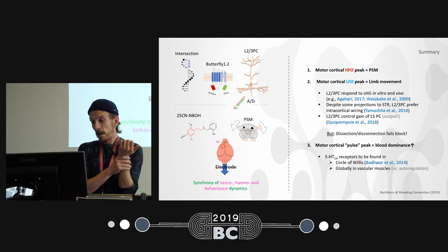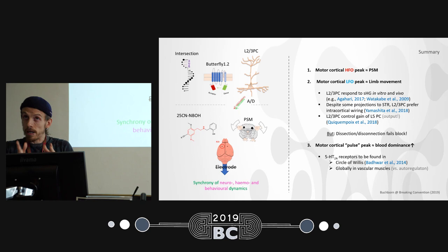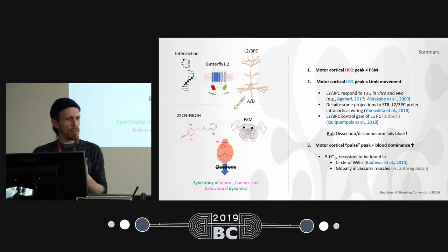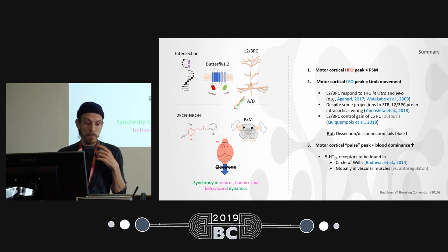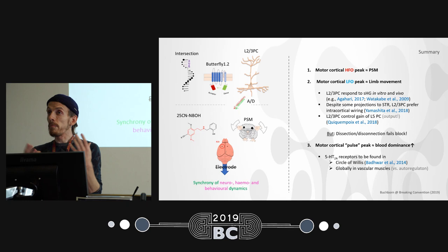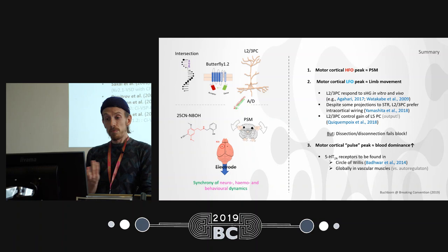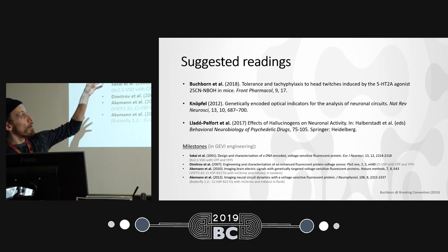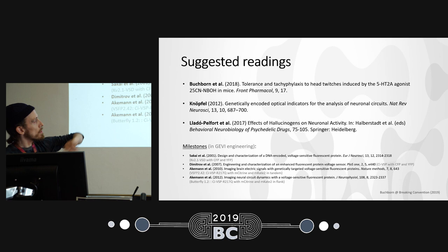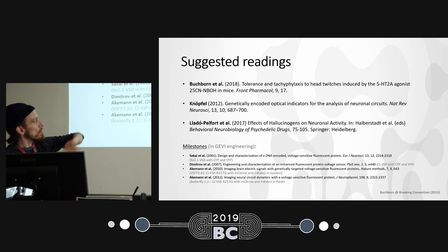We know that in mice, serotonin 2A receptors can be found in the circle of Willis, which is the hub at the base of the brain supplying it with blood, and capillaries are wrapped with glial cells that also express it. This is important to keep in mind when analyzing fMRI data. For suggested reading: the Knöpfel paper for the Butterfly method, and the Halberstadt article for a nice overview of the neurophysiology of serotonergic hallucinogens, particularly in animals.